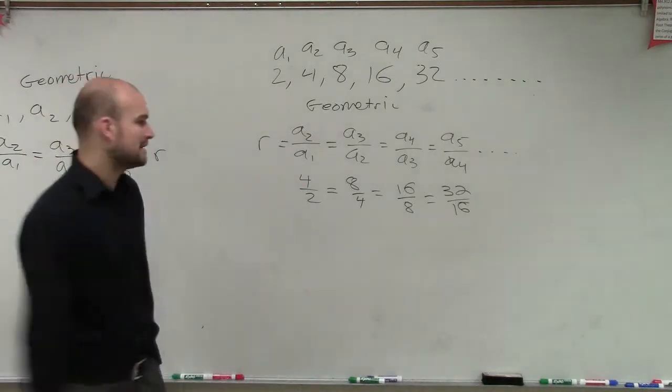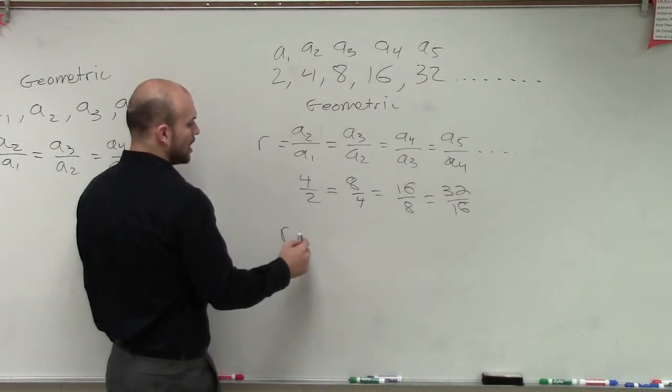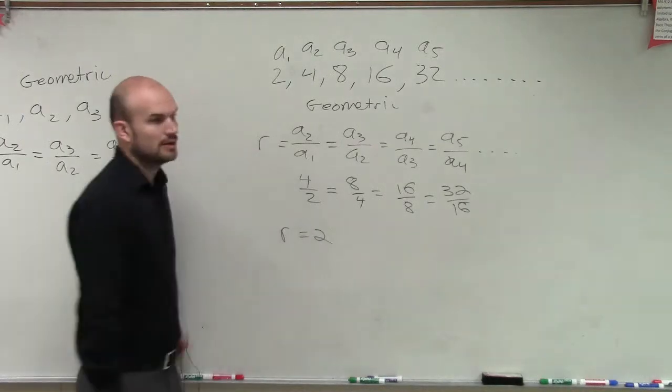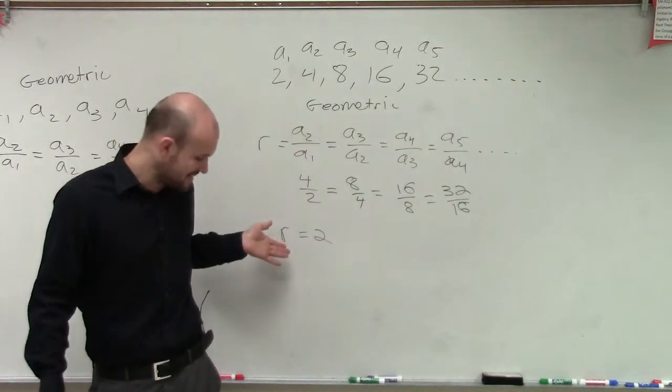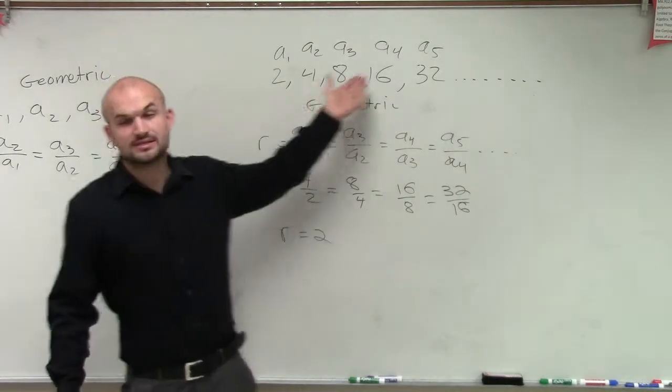Which is pretty obvious. You can see that now my ratio, r, is going to equal 2, because each one of these ratios is equal to 2. So now, therefore, since I have a ratio, I know that this sequence is geometric.